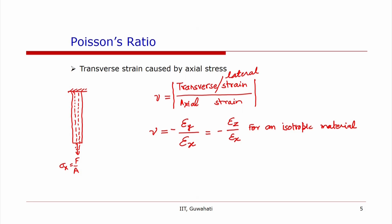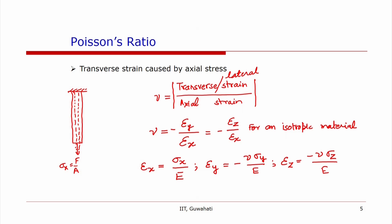One can write that in the case of axial stress: epsilon-x equals sigma-x over E, epsilon-y equals minus nu times sigma-y over E, and epsilon-z equals minus nu times sigma-z over E. This is Poisson's ratio.